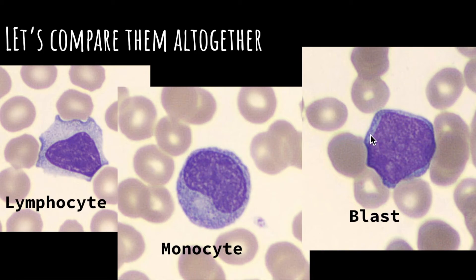The mono still has that grayish-blue granular granulation inside, and the monos don't react to the RBCs — it's just doing its own thing. The blast has the largest NC ratio; the nucleus is just huge, you can see the nucleoli staring at you, and the cytoplasm is super thin.